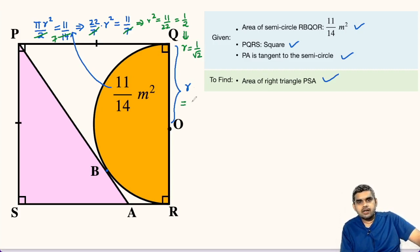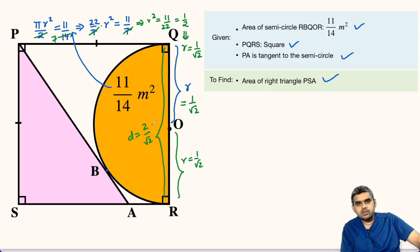So, the value of R is 1 upon root 2. So, this length will also be the radius of this semicircle 1 upon root 2. Hence, the diameter of the semicircle will be equal to 2 times 1 upon root 2 that is 2 upon root 2 or root 2 units. Now, this diameter of the semicircle is the side of this square PQRS. So, we can write PS is equal to root 2 units.